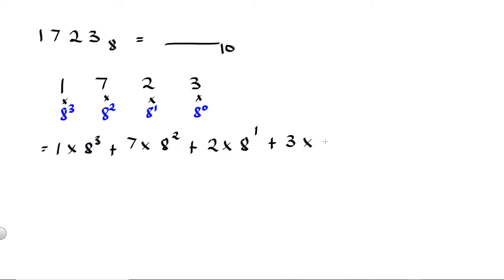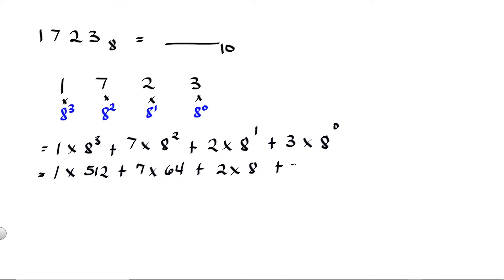Simplifying: 1 times 8 raised to 3 is equal to 512, plus 7 times 8 raised to 2 is equal to 64, plus 2 times 8 raised to 1 is equal to 8, plus 3 times 8 raised to 0 is equal to 1. Then 1 times 512 is equal to 512, plus 7 times 64 is equal to 448, plus 2 times 8 is equal to 16, plus 3 times 1 is equal to 3.